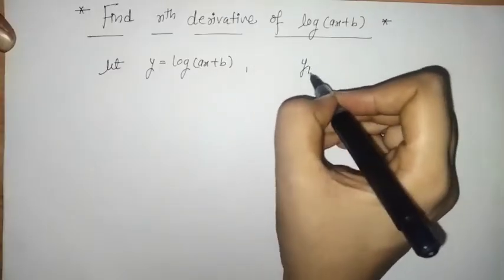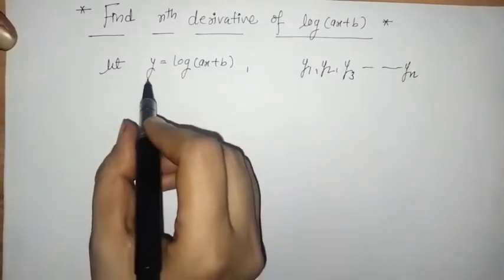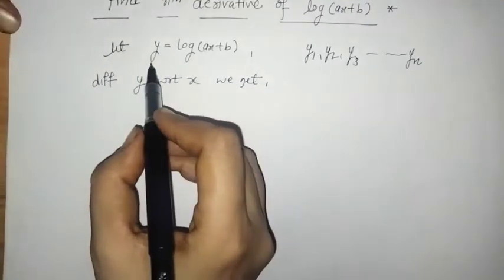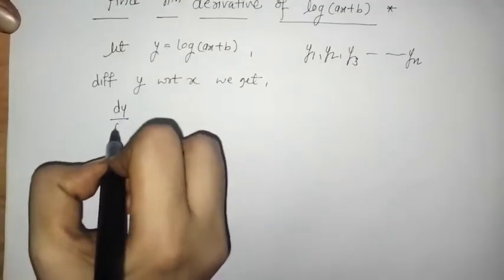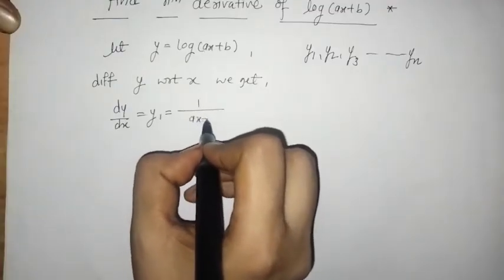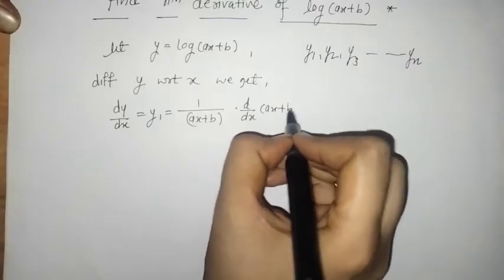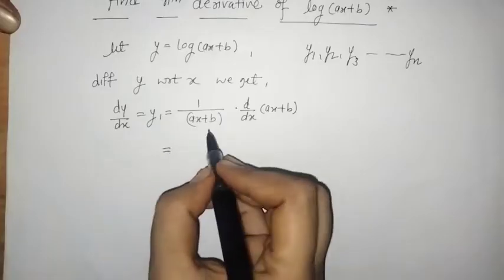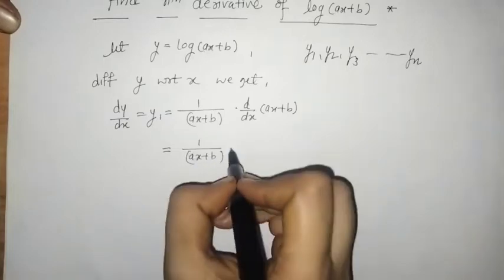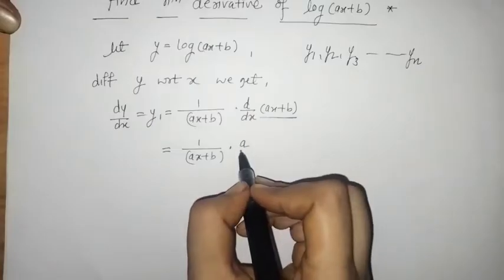So first we have to find y1, then y2, then y3, up to yn. Let's differentiate y with respect to x. Differentiating y, we get the first derivative y1, which is given by 1 upon ax plus b, into the derivative of ax plus b. This is where we have applied the chain rule, so we have 1 upon ax plus b into a.